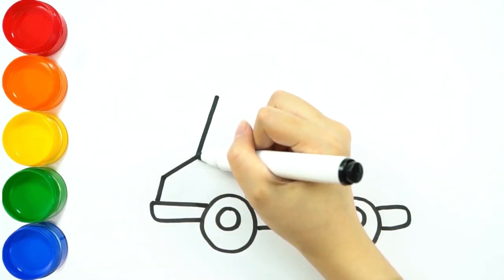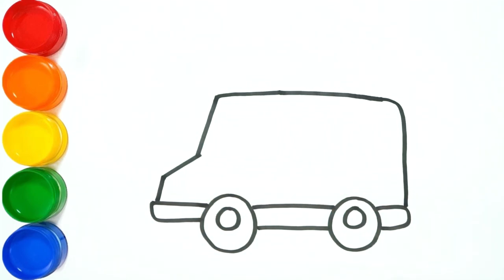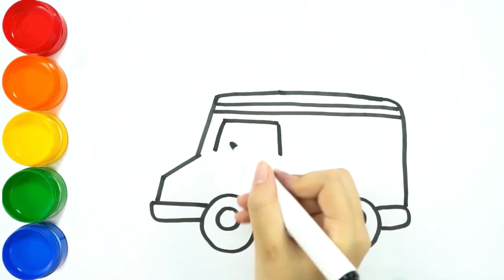It has four wheels, a flashing light, and on the body of the car with a red cross symbol.